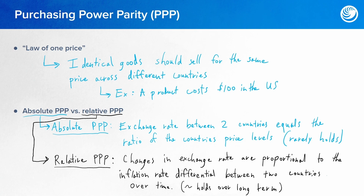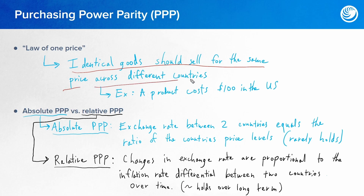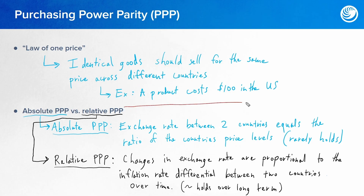Let's take a look at our next parity theory: Purchasing Power Parity, or PPP. This is known as the Law of One Price, which asserts that identical goods should sell for the same price across different countries when expressed in a common currency. An example could be a product that costs $100 in the U.S., which should cost an equivalent amount in euros in the eurozone when adjusting for the exchange rate.